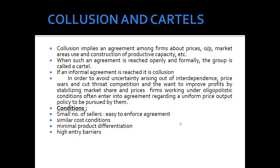Hi everyone, let's begin with collusion and cartels — what is the difference between collusion and cartels? We have already finished determinants and how we can decide price and output in an oligopoly market. This is also one of the very important features of the oligopoly market. Collusion implies an agreement among firms about prices, output, market areas, use and construction of productive capacity, etc. When we are collectively making such an agreement on various issues, that is collusion.